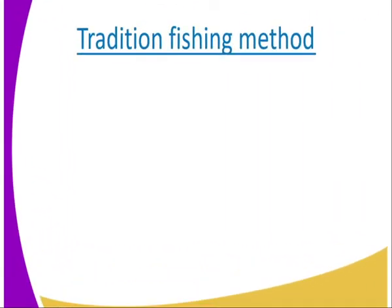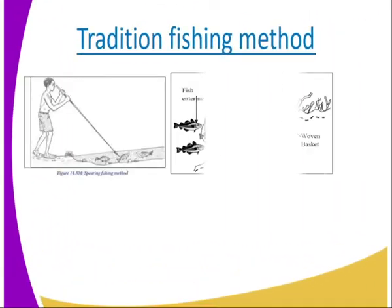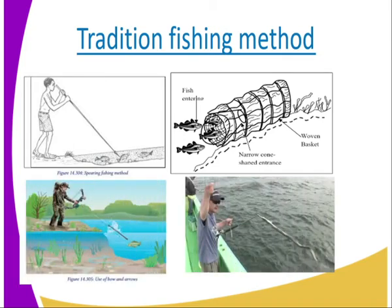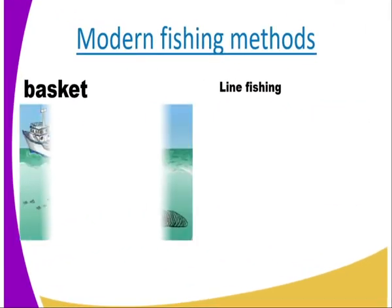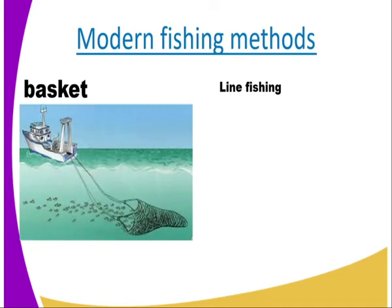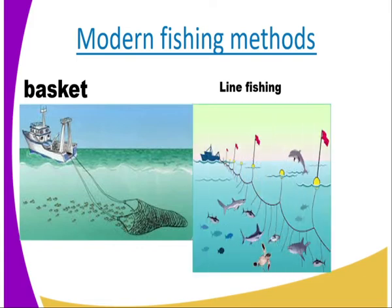Now let us look at the different methods of fishing. We have the traditional methods, which include line fishing, hook and trap, and basket fishing. We also have the modern types of fishing, such as trawling and net fishing, where we catch a large number of fish at the same time.